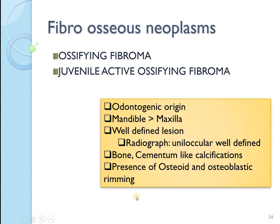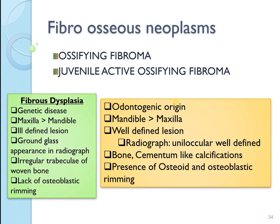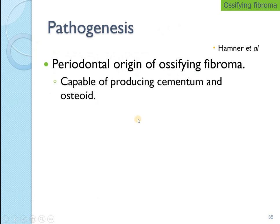Now let us look at the fibro-osseous neoplasms, which include ossifying fibroma. Contrary to fibrous dysplasia, ossifying fibroma is considered to be of odontogenic origin because more oxytalan fibers are found in ossifying fibroma, and oxytalan fibers are considered to originate from the periodontal ligament space. The stark contrast is that fibrous dysplasia is a genetic disease whereas ossifying fibroma is of odontogenic origin. Fibrous dysplasia is more common in the maxilla; ossifying fibroma is more likely seen in the mandible. The fibrous component is similar to fibrous dysplasia; however, the osseous component contains some cementum-like material.